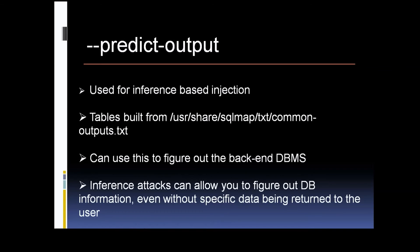The last one under this category is the predict output switch. This switch is used for inference-based blind SQL injection attacks. With this kind of attack you can infer or deduce information about the backend DBMS by sending specific queries to the target, and this works off of true or false results that you get back. Inference attacks are used when there is no data being returned to you — you know there's a possible SQL injection vulnerability, but when you try your injection strings you're not seeing any error messages or anything specifically indicating it, but something just isn't looking right.